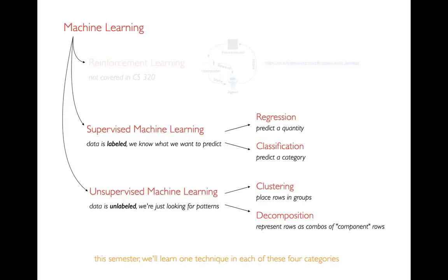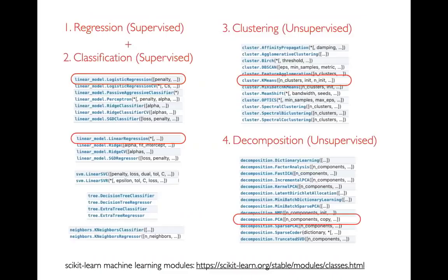So that's a whirlwind tour of the four problems we'll solve. Regression and classification are both supervised because the data is labeled. Clustering and decomposition are unsupervised — no column to predict. For each of these four types, there are actually hundreds of different algorithms. This semester we won't have time to learn more than one or two per category. The scikit-learn website lists close to hundreds of different algorithms and classes.